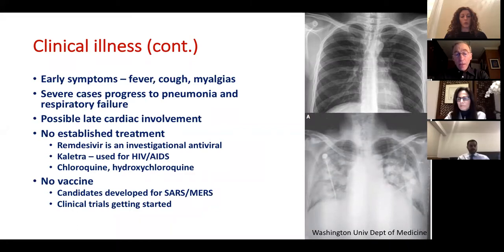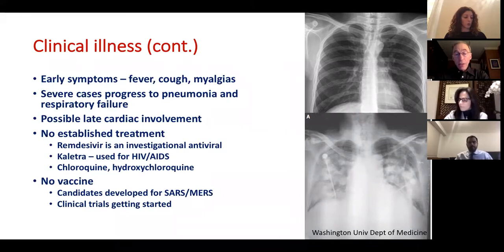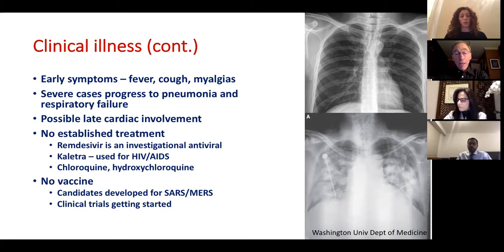People are trying out various FDA-approved drugs. An HIV drug called Kaletra got attention for possible activity against MERS, but a recent New England Journal study suggested it probably is not very effective. There has also been talk about the anti-malarial drug chloroquine and its close cousin hydroxychloroquine, used for lupus and some forms of arthritis. These drugs may have some antiviral activity, but it's too early to know if they have a role in treating COVID-19 patients.